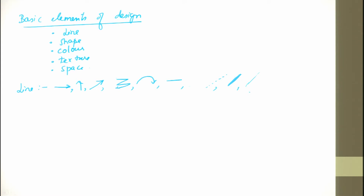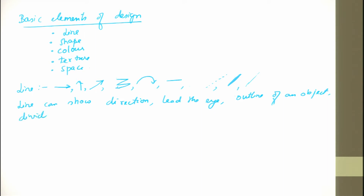Lines show direction, lead the eye, outline an object, divide the surrounding space, and can also communicate both feelings and texture.